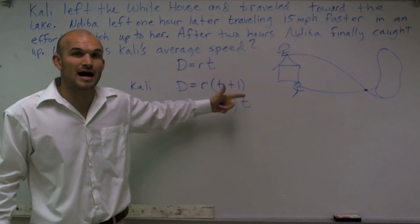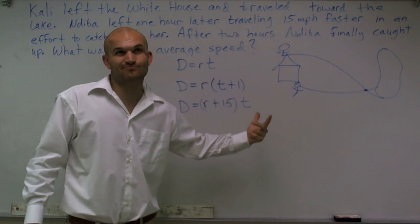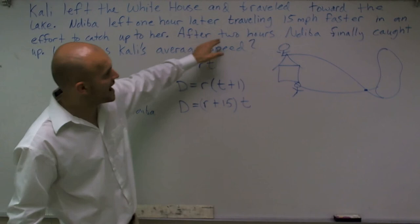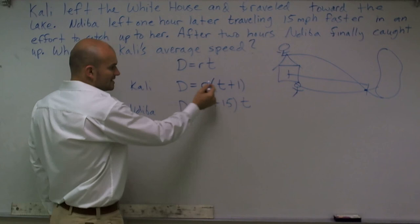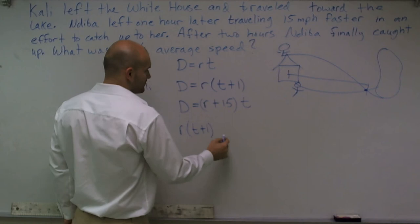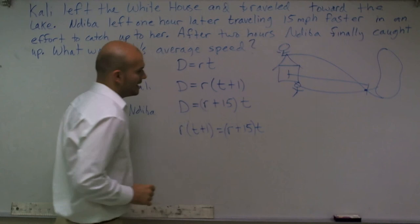Because remember, Callie had that time plus 1, right? She had that extra hour because she left earlier. So she had an hour head start. That's why I'm adding the plus 1. So now I look at this and it says after two hours, finally caught up. So that means the distance that both of them traveled is equal to each other. So I can say this equation is equal to this equation. So I'll say R times T plus 1 is equal to R plus 15 times T.